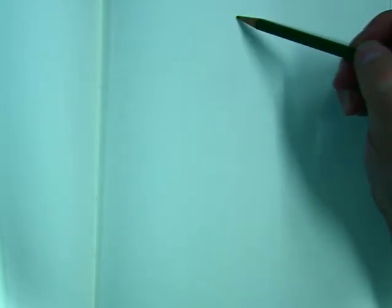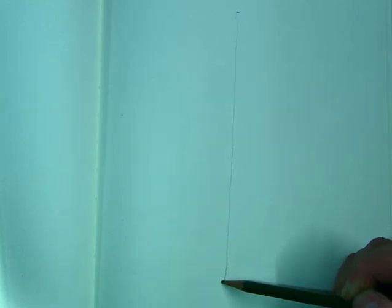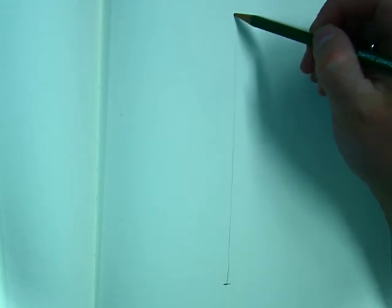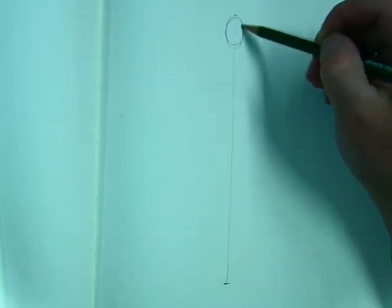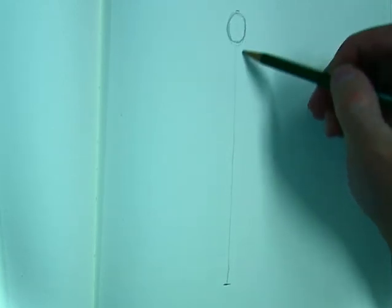And the first thing we'll do is put in a center line to show us where the center of our body is. And the next thing we'll do is put in those heads, and we're going to do our best ovals that we can. If it looks like a potato, that's okay.